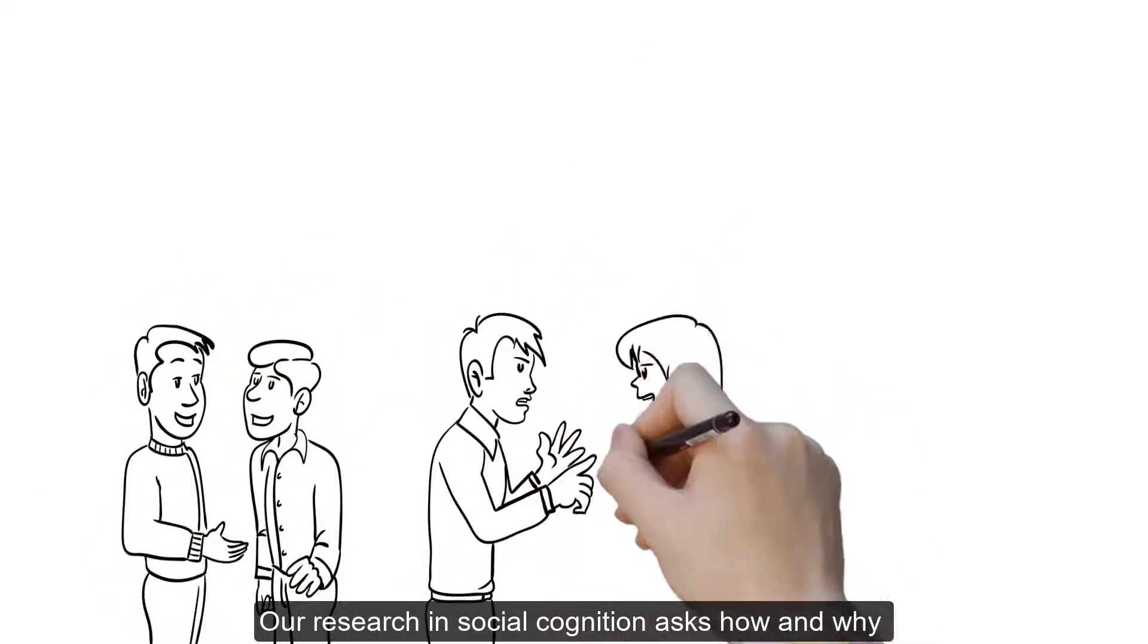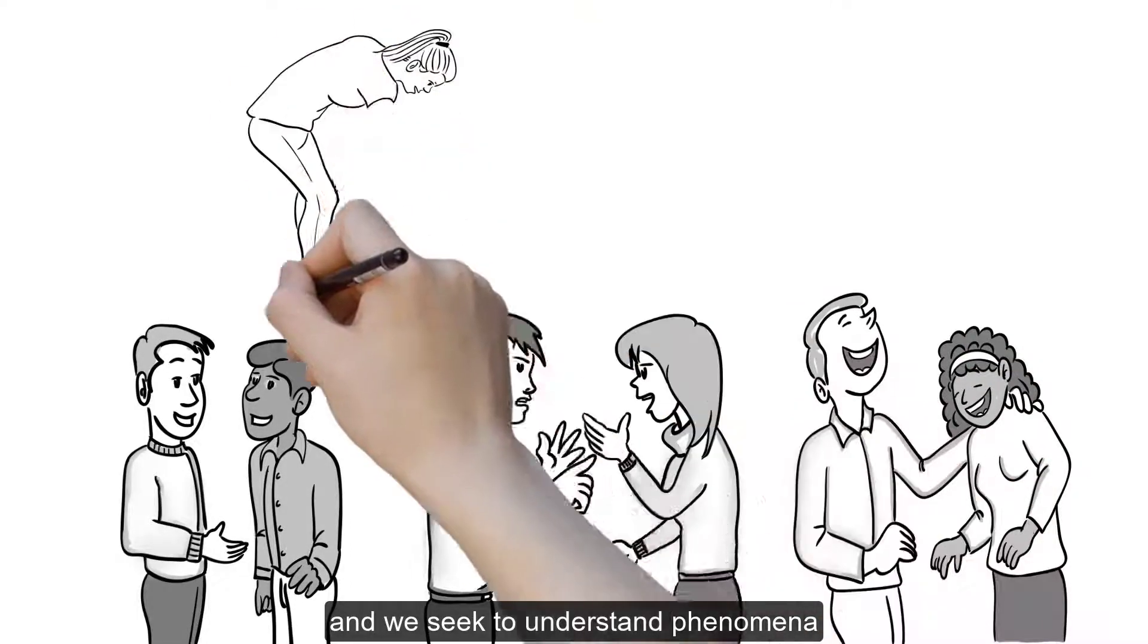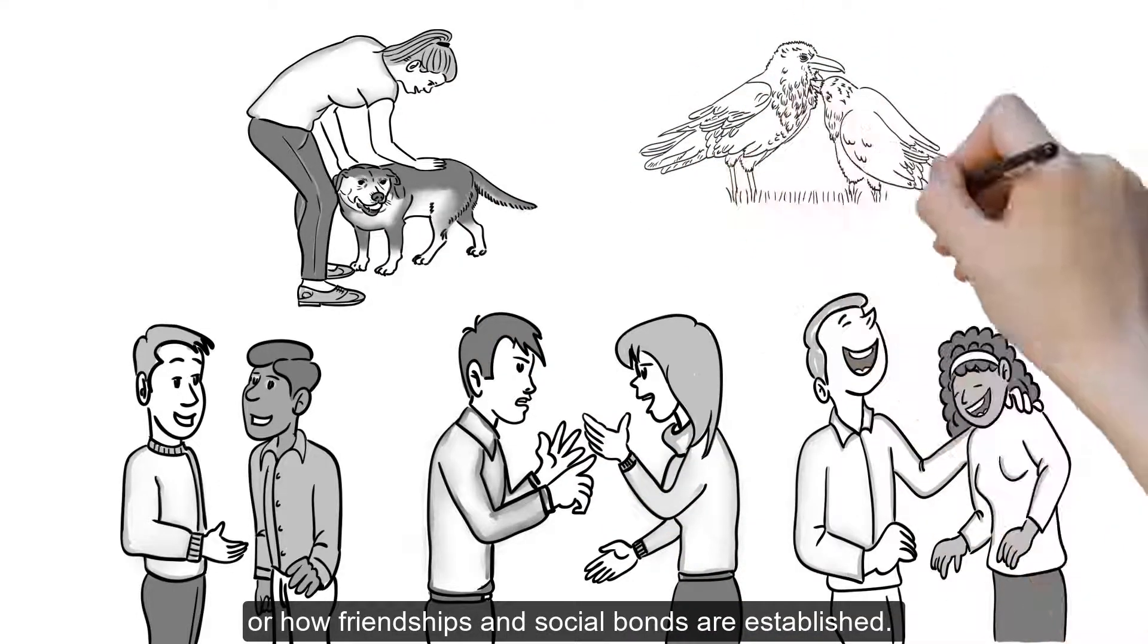Our research in social cognition asks how and why individuals cooperate or compete with one another, and we seek to understand phenomena such as empathy and prosociality, or how friendships and social bonds are established.